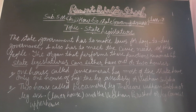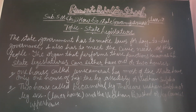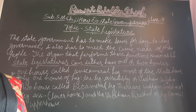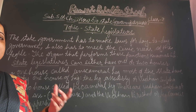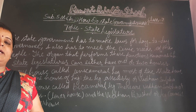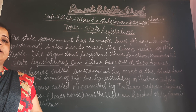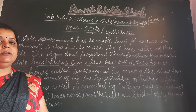In addition to the elected members, the governor of the state can nominate one member of the Anglo-Indian community if he or she feels that the community is not being adequately represented in the Assembly. Anglo-Indians are Britishers who are living in India.